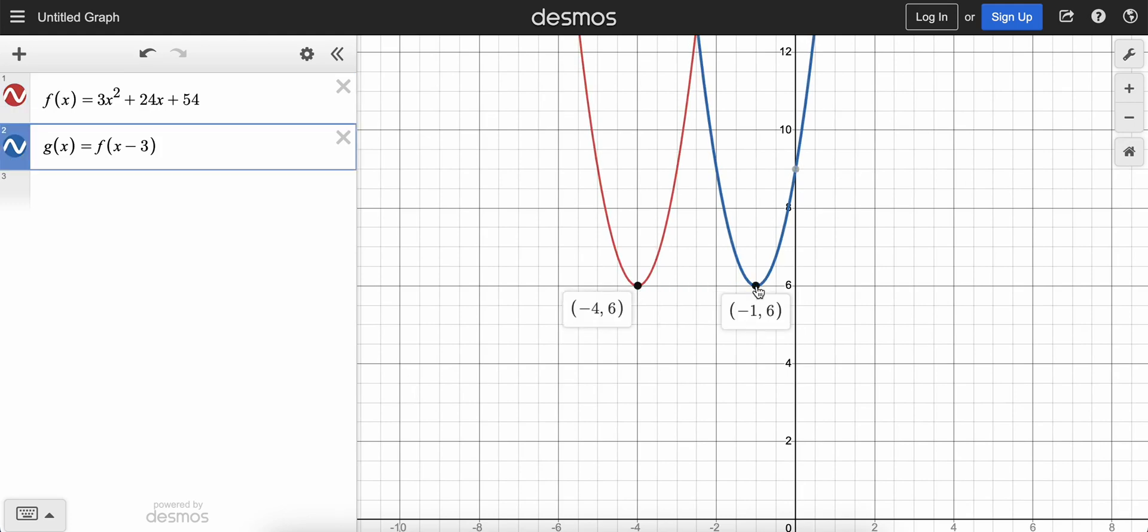And you could click these to just confirm their vertices, the vertex. But what I can do is I can actually hide this graph of the red one by clicking that button just so that I don't see it and get distracted by it because they're asking us about g, which is the blue one.